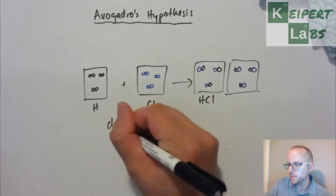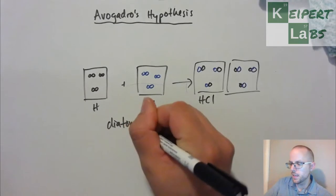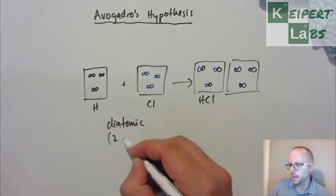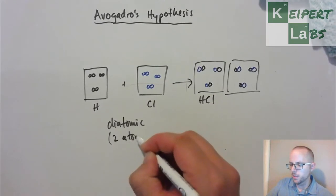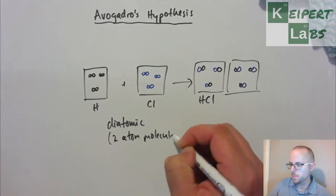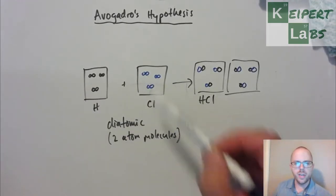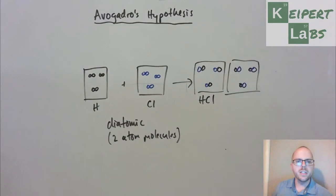So what this suggested was that these substances, these elements, were known as, were called diatomic. That is, they have two atom molecules. So each molecule, each of these little lumps of hydrogen, or lumps of chlorine, contains two atoms connected together, fused together, which then helps to explain what we're observing over here.